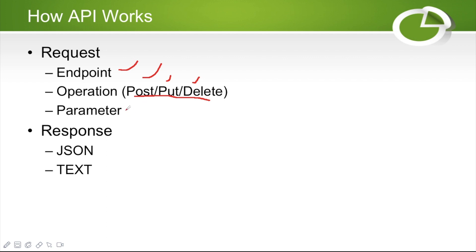Next are parameters. Parameters means you are passing some image name or some value during the API call — those are called parameters. There is also the response. Whenever we hit a server, we are expecting to receive some data back. That is called the response. The response can be in JSON format or text format, and then we process it and show the data in our website.